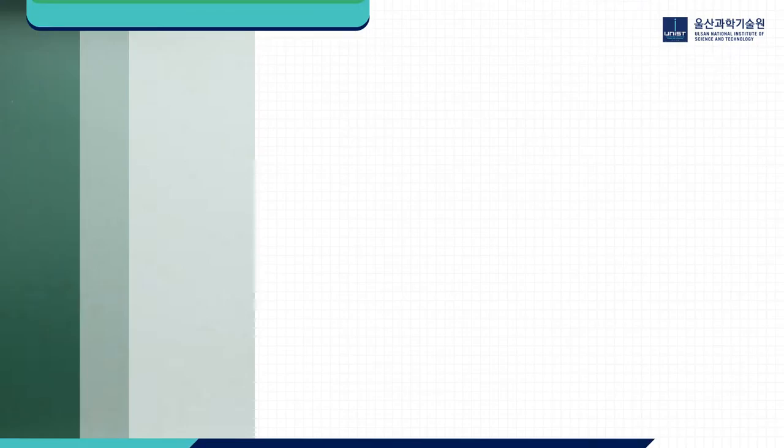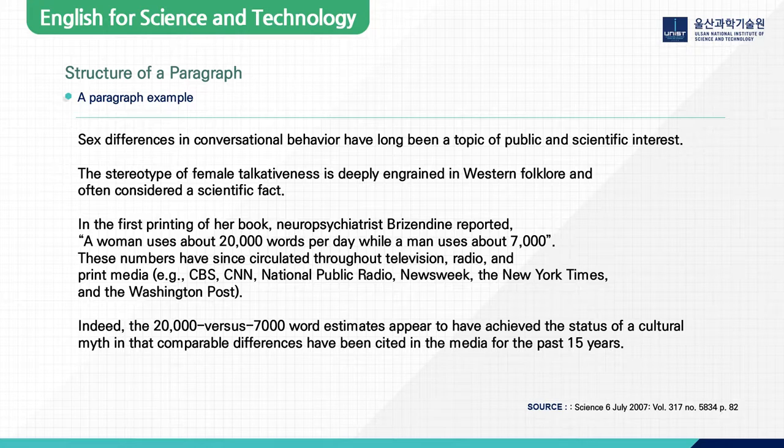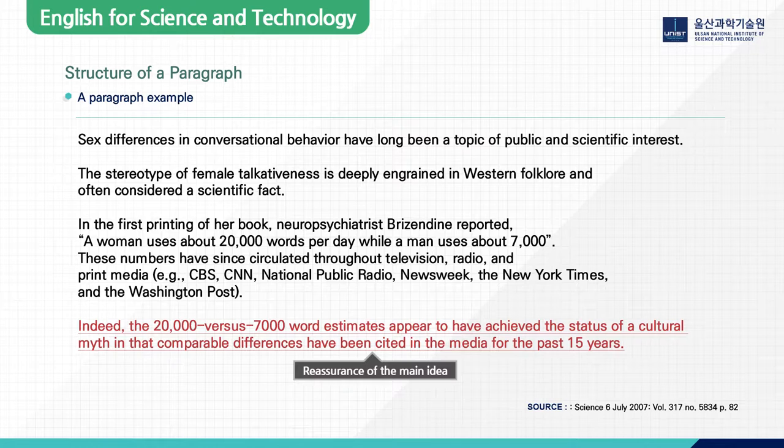This is an example of a paragraph structure. As we see here, we have the major components of a paragraph: the main idea and focus, supports, elaboration, and reassurance of the main idea, which is the conclusive sentence.